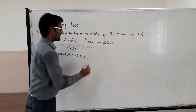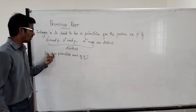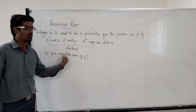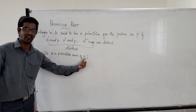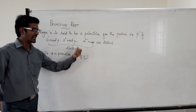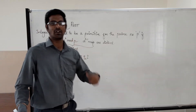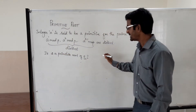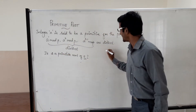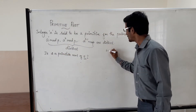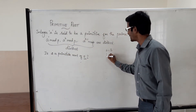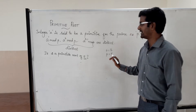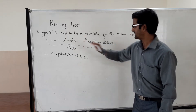For example, we want to check whether 2 is the primitive root for the prime number 5. So we have to apply this formula. Just see how I am applying. Here a is equal to 2 and the prime number p is equal to 5. Now we will apply this.